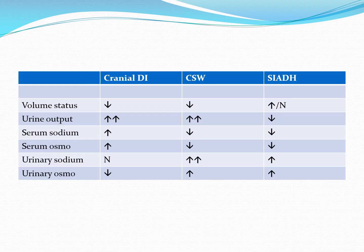In this slide, I've sought to summarize and contrast these three different diseases. In cranial diabetes insipidus and cerebral salt wasting, our patients are dehydrated with high urinary outputs — in contrast to SIADH, where patients are usually euvolemic or slightly overloaded with a low urinary output. To differentiate cranial diabetes insipidus from cerebral salt wasting, look at serum and urine sodium levels: serum sodium is high in cranial DI but low in cerebral salt wasting, and urinary sodium is typically normal in cranial DI but very high in cerebral salt wasting.